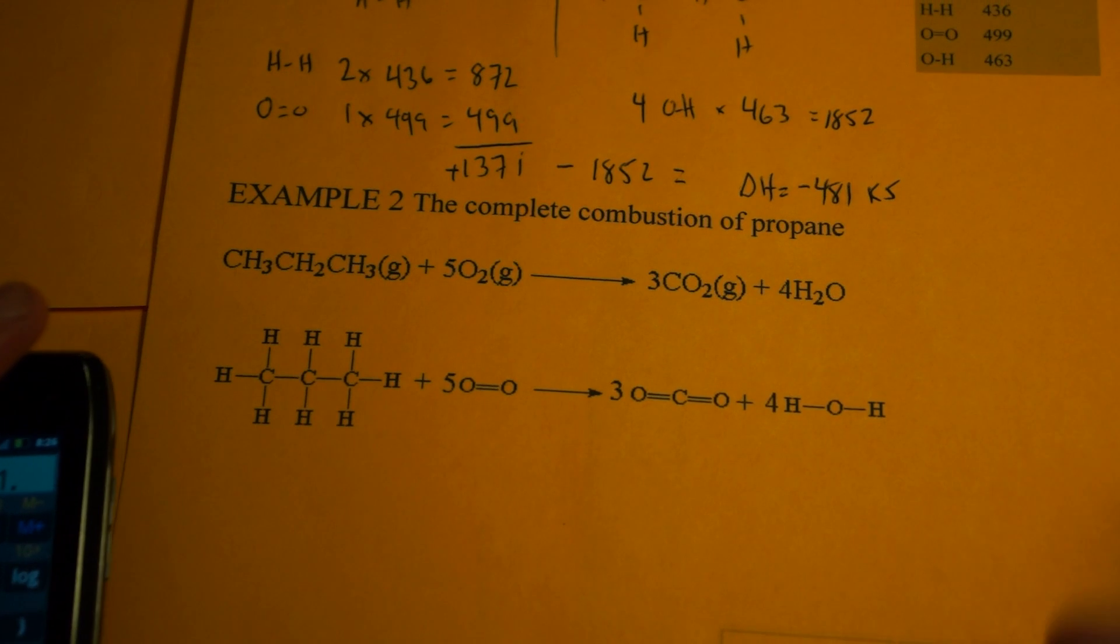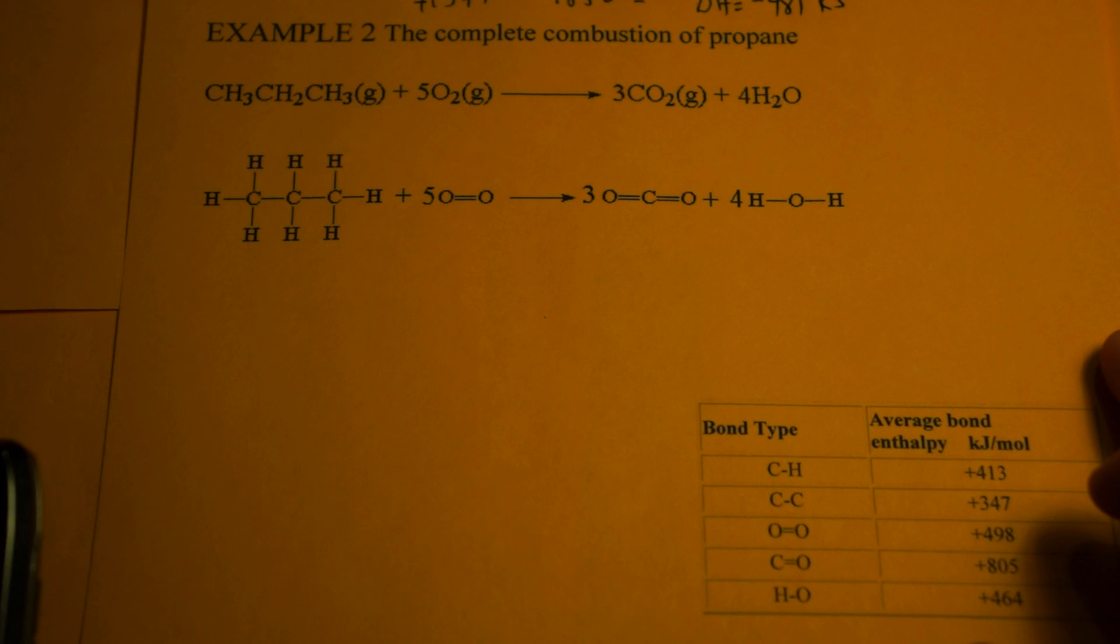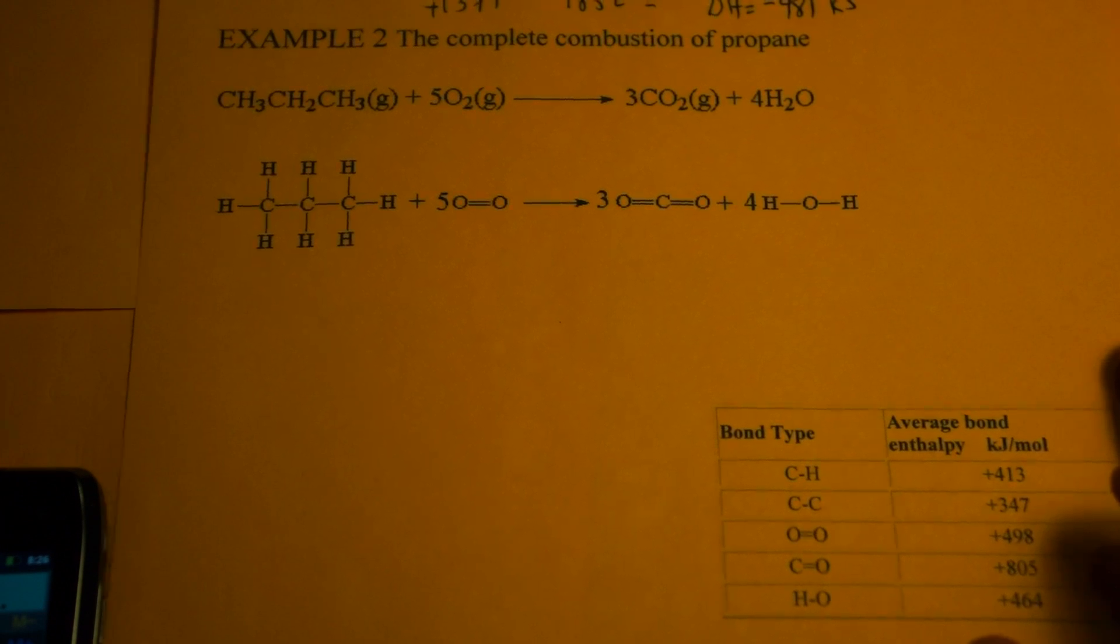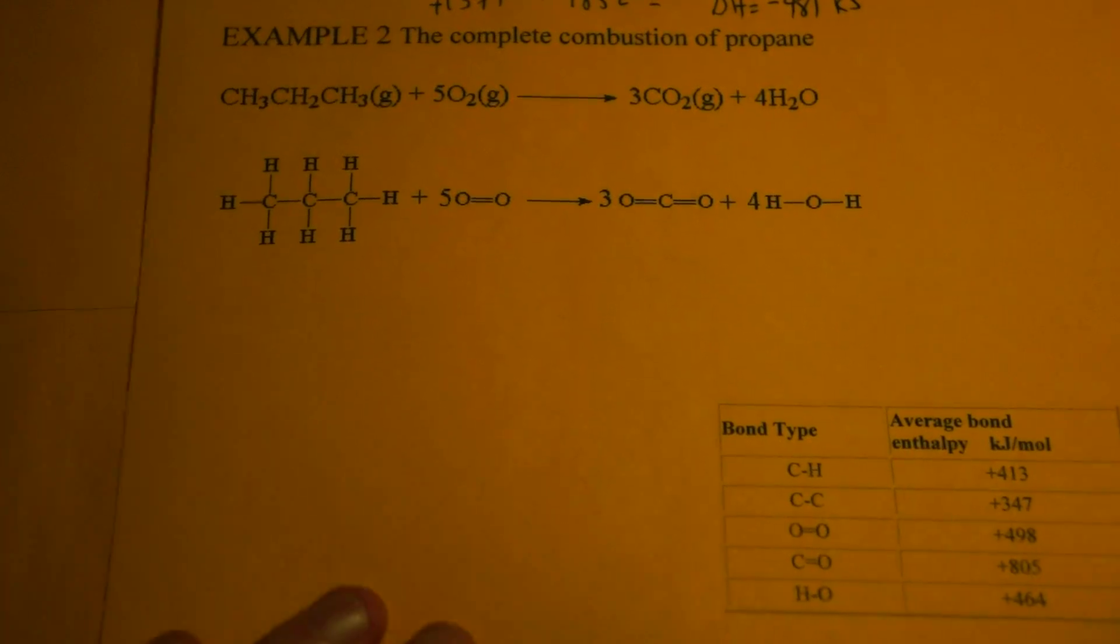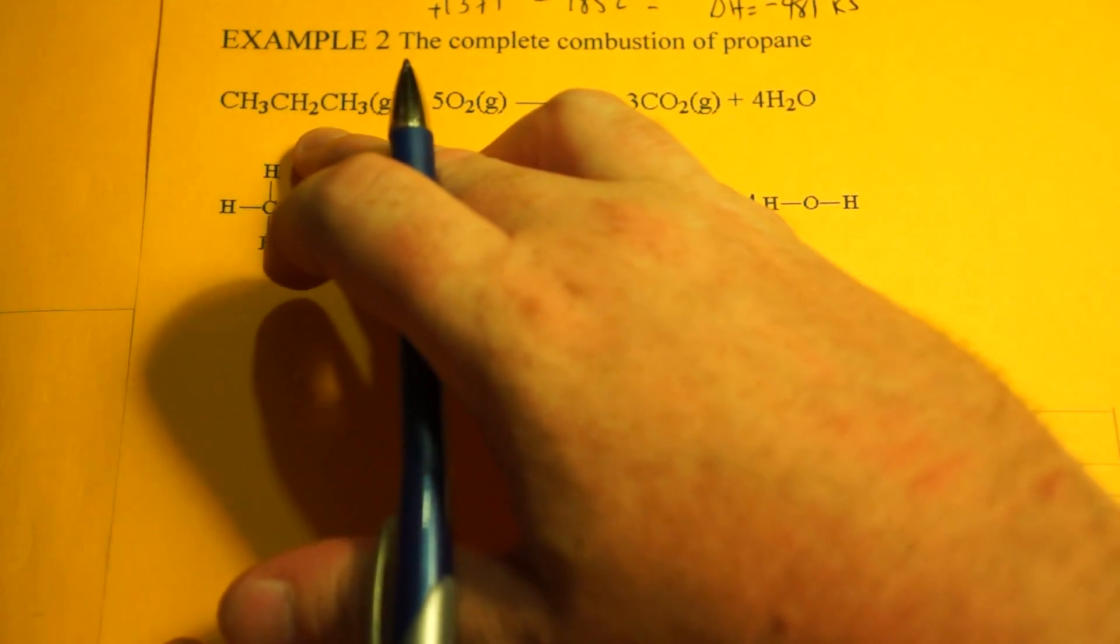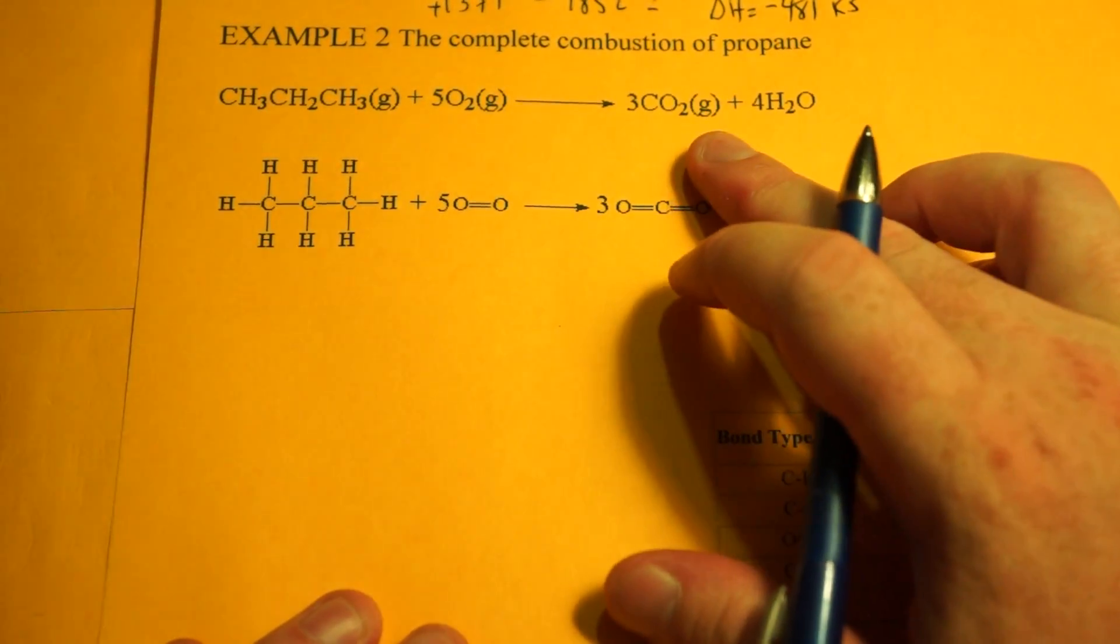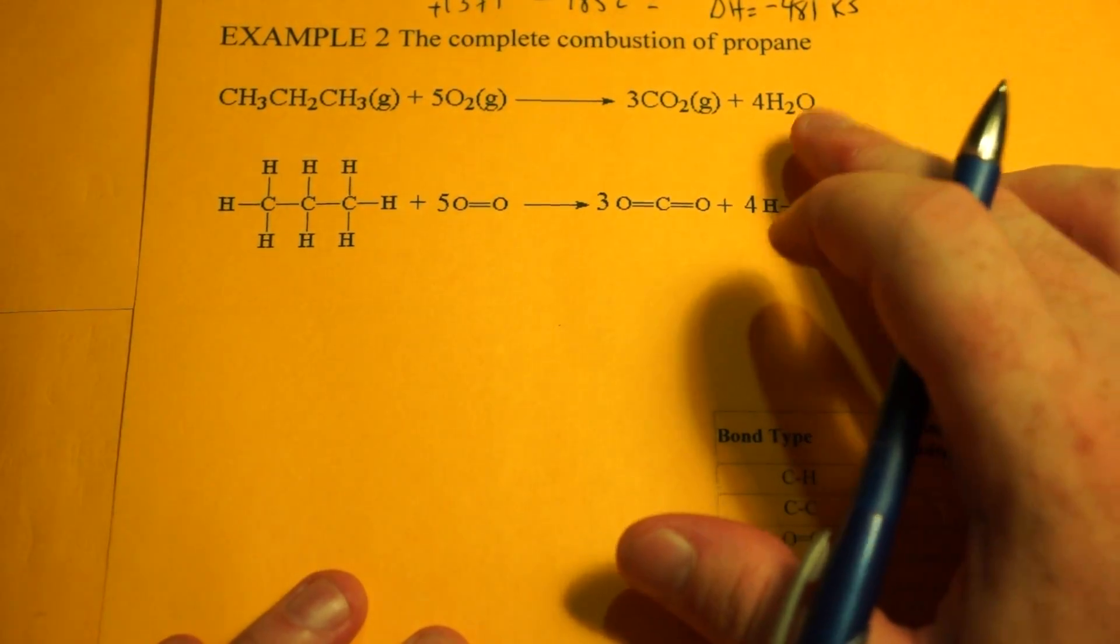Now we're going to do the combustion of propane. What you should know is any combustion, delta H is going to be negative. So if you don't have it as a negative, you did something wrong. Here's propane, CH3CH2CH3, reacts with 5 moles of O2 and forms 3 moles of CO2 and 4 moles of water.